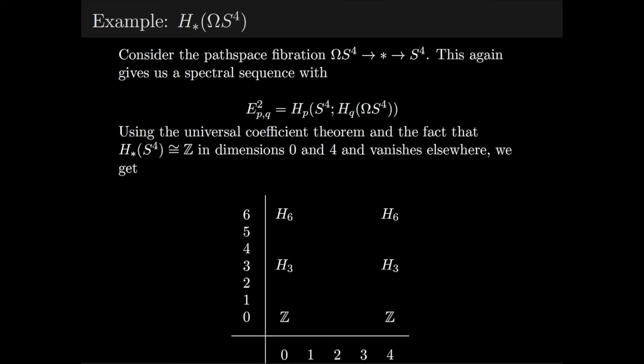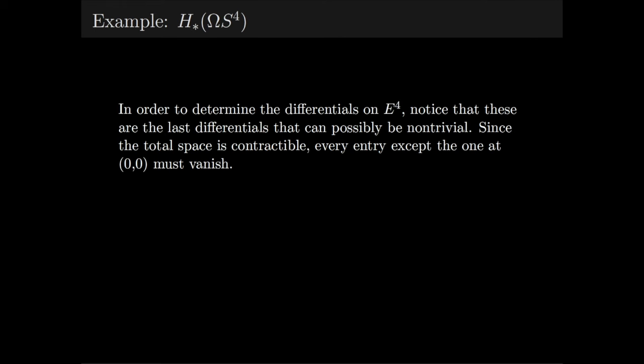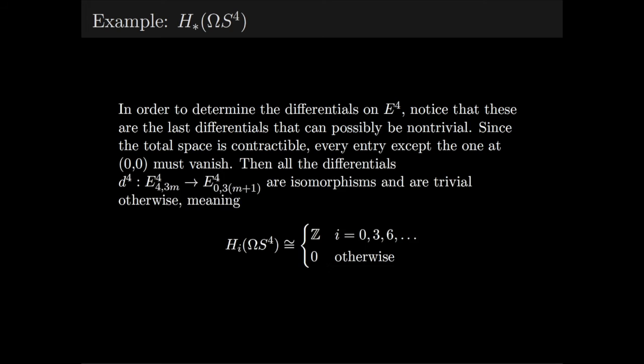Once again, we only have to consider certain differentials and consider whether they're non-trivial. In order to do this, notice that these are the last differentials that can possibly be non-trivial, since on further pages, all of the differentials must be 0. Since the total space is contractible then, every entry except the one at (0,0) must vanish, meaning that all of these differentials highlighted are isomorphisms.